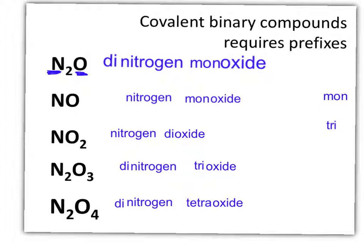We've named these five chemicals with unique names that allow us to go from the name back to the formula when needed. That's how we name compounds with only two elements. I hope that helps — feel free to go back and look at the video again.